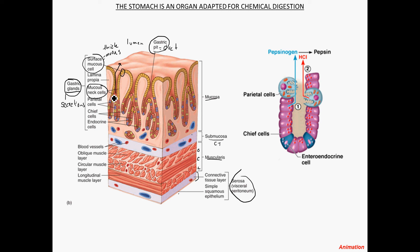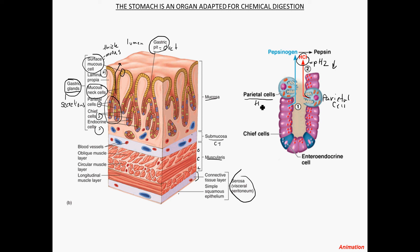Getting down to the base of these ducts, we see several different cell types. First, parietal cells, which secrete hydrochloric acid. That hydrochloric acid makes the pH of the stomach contents around two — an extremely low pH. The parietal cells are shown here in the diagram on the right.